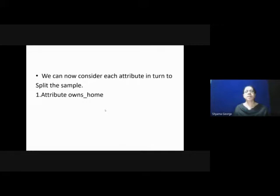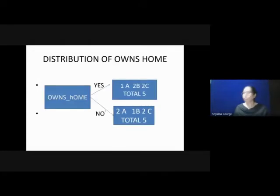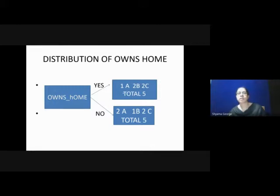Now, we can consider each attribute in turn to split the sample. First, we are taking the attribute Ons. When we take the attribute Ons, there are 2 values: Ons-Yes and Ons-No. There are 5 records with Ons-Yes, and the class label of these records are 1 in class A, 2 in class B and 2 in class C. When you consider the records with Ons-No, there are total 5 records: 2 in class A, 1 in class B and 2 in class C.